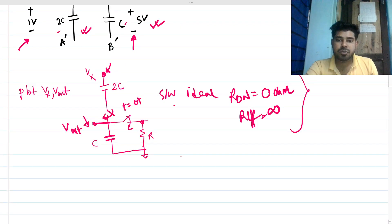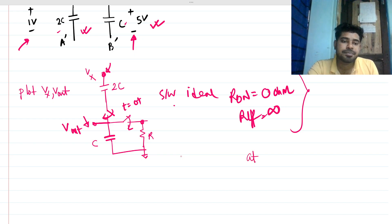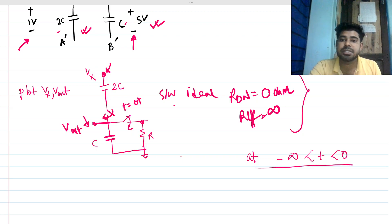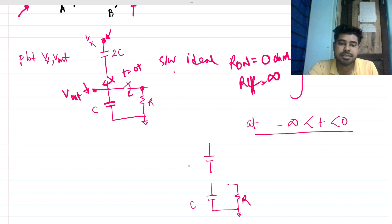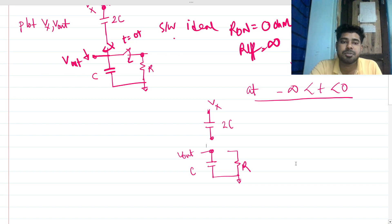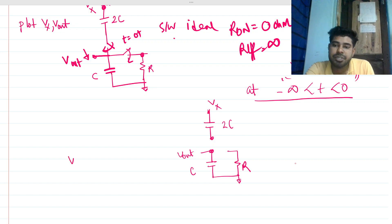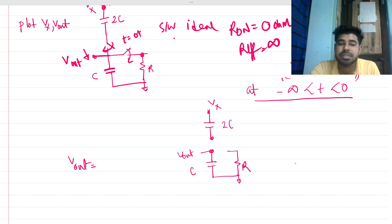First, let's consider what is happening at t equals minus infinity, up to t equals zero. The switches are open, so the equivalent circuit looks like this: R, C, V_out, V_x, and 2C. We can predict V_out and V_x during this time. Since no current is flowing through the whole circuit — no charging or discharging is happening — the capacitor cannot change the voltage across it, so it holds its previous condition.